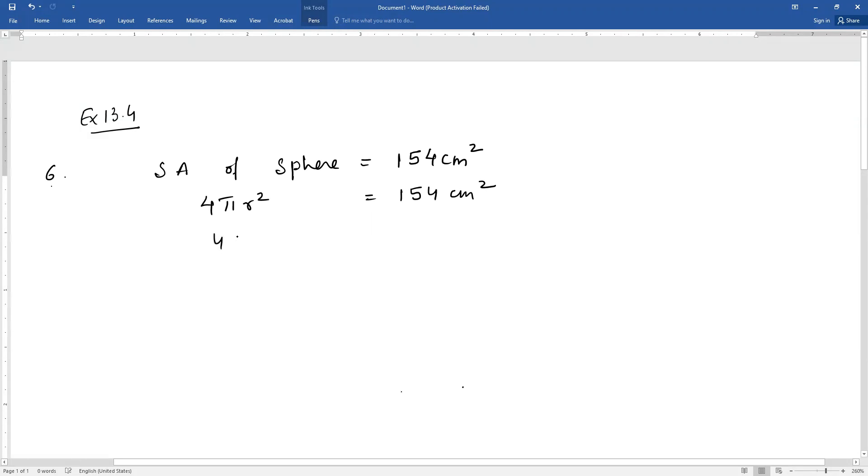You have to substitute the values. 4πr² = 154 cm². Therefore r² is equal to 154 × 7 upon 4 × 22 cm².